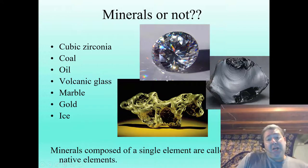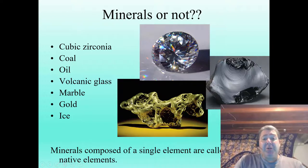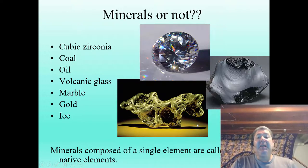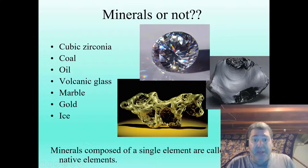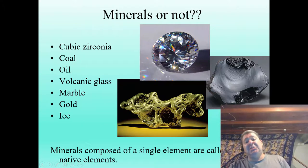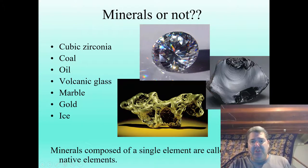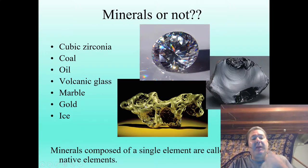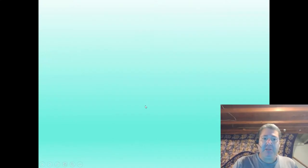Some minerals like gold, copper, and sulfur can exist as just themselves. We can get gold compounds, but we can also get just pure gold. If the mineral exists as just itself — all of this is just gold atoms — they're called a native element. Alright folks, we'll see you next time.